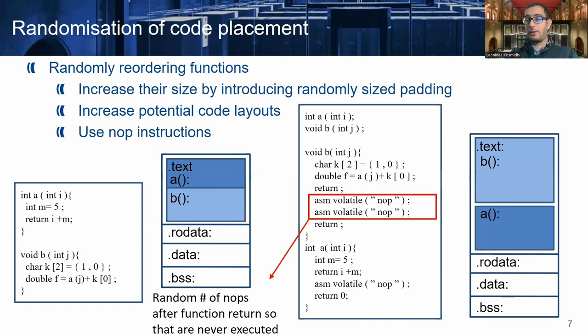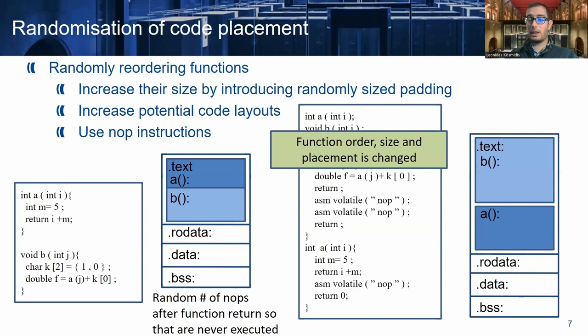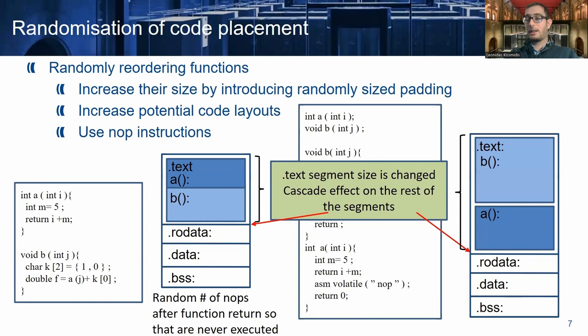In this way, we can change the order, the size, and the placement of functions inside the executable. Also, the entire size of the text segment is changed, which can have a cascade effect on the rest of the segments, because each segment is placed one after the other.